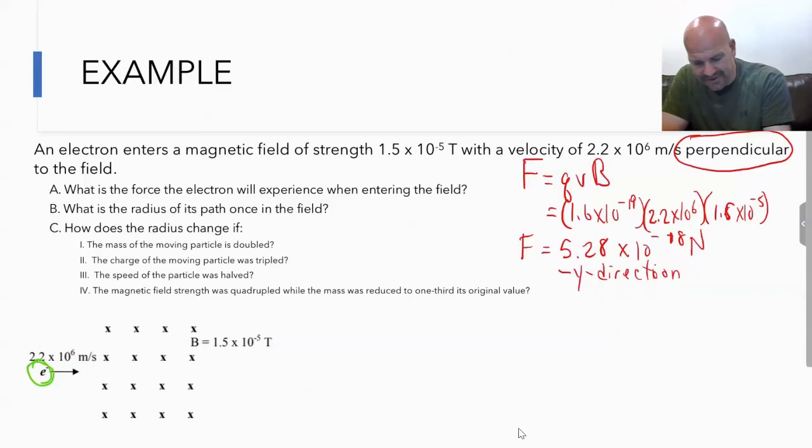What would happen to this proton as it enters the field? The second it enters the field, it's going to be pushed down and follow a circular path much like that. Part B says, what is the radius of that path? We have our equation already solved: r equals mv over qB.